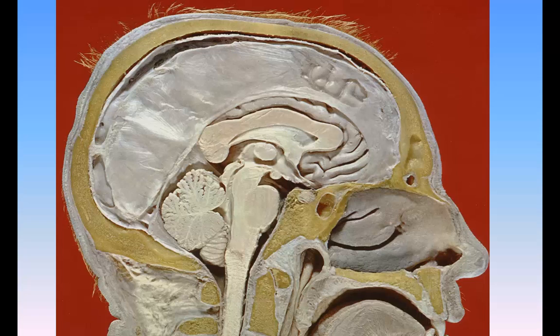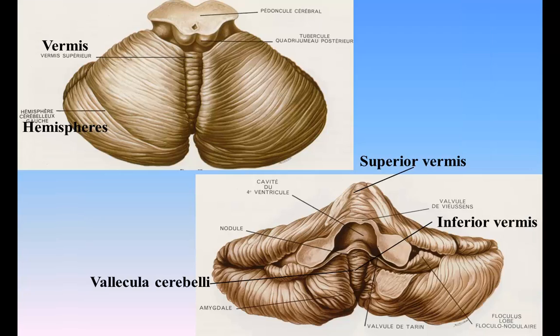Its average weight in the male is about 150 grams. In the adult, the proportion between the cerebellum and cerebrum is about 1 to 8. In the infant, about 1 to 20.